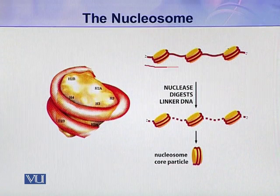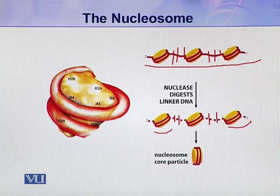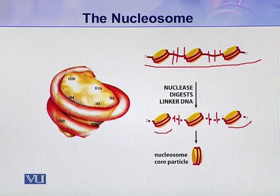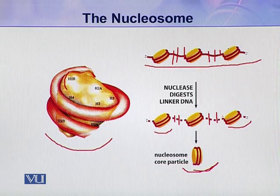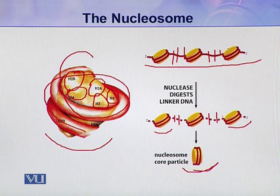Here you can see the chromatin fiber. If we digest this fiber with nuclease, the linker DNA is digested and individual nucleosomes are produced. If we continue digesting with nucleases, it results in the nucleosome core particle. In this core particle there are 8 histone molecules, and around this octameric complex the DNA molecule is wrapped for approximately two rounds. This is the nucleosome core particle.